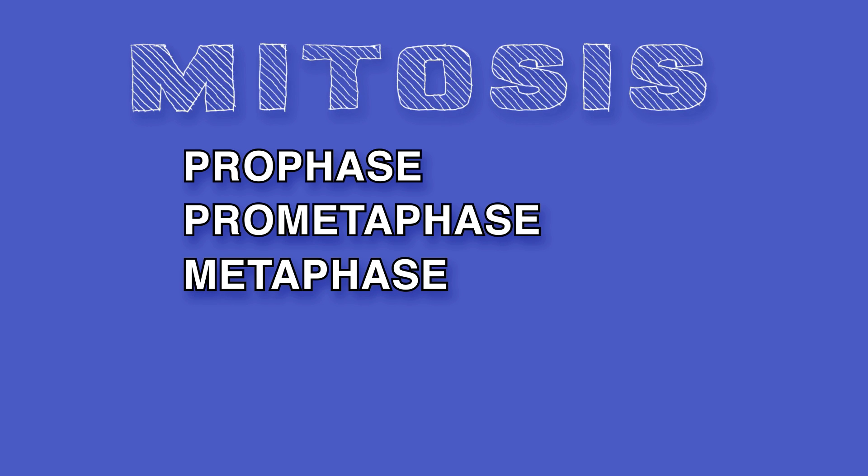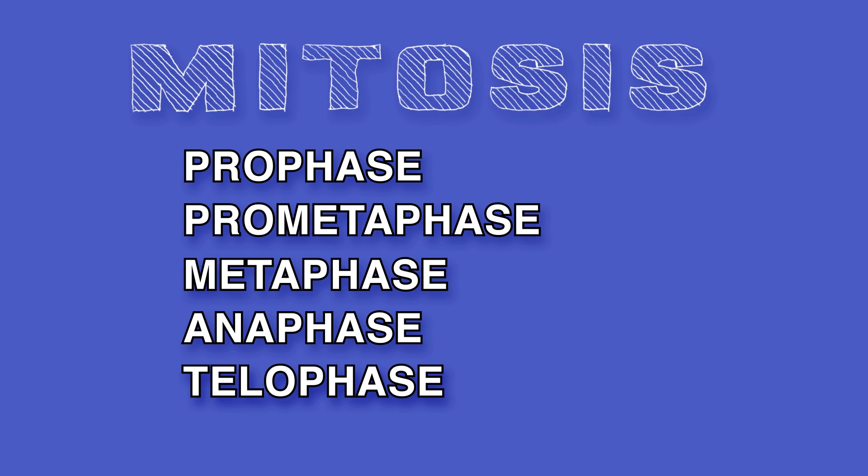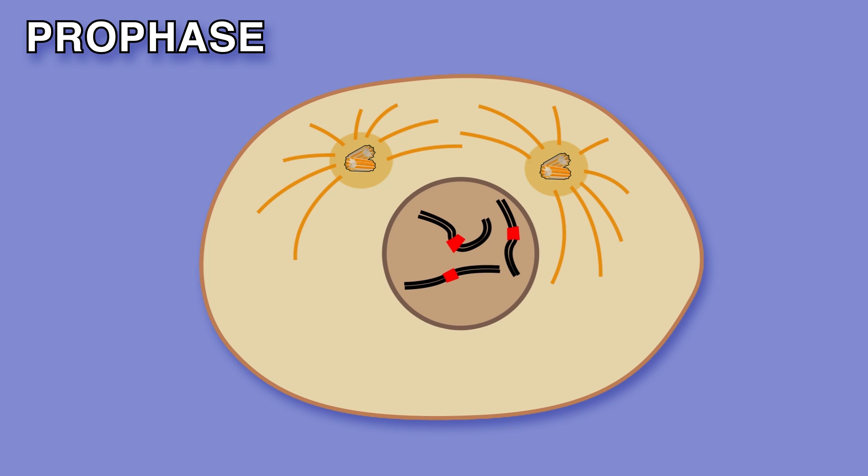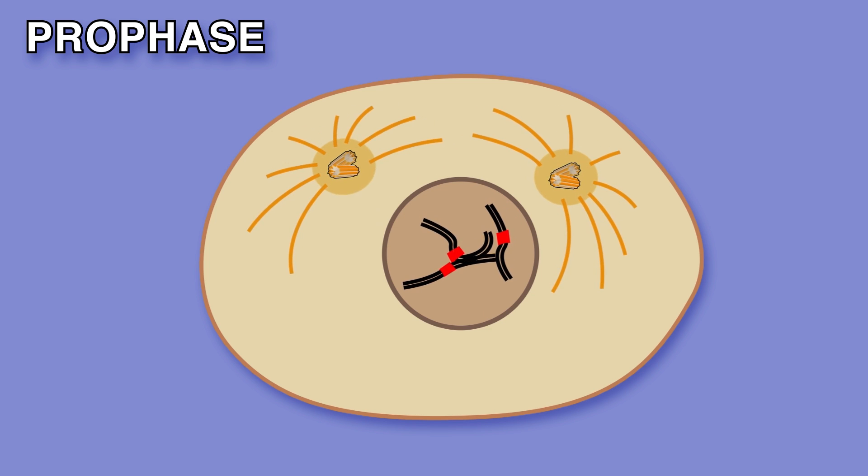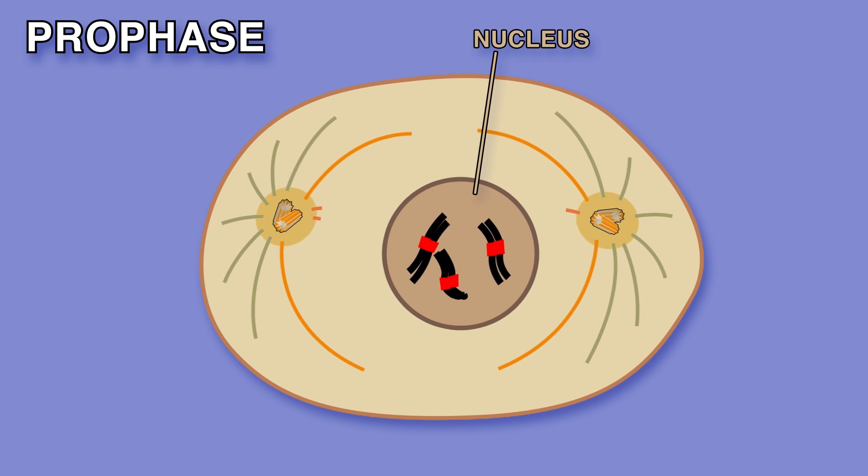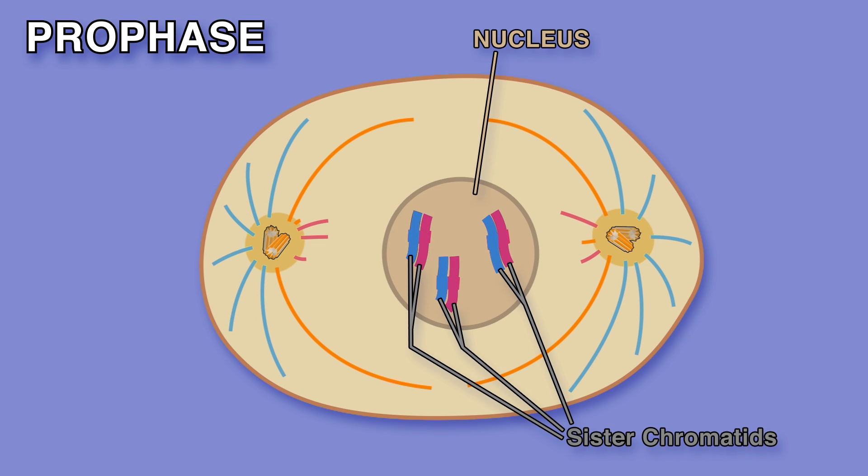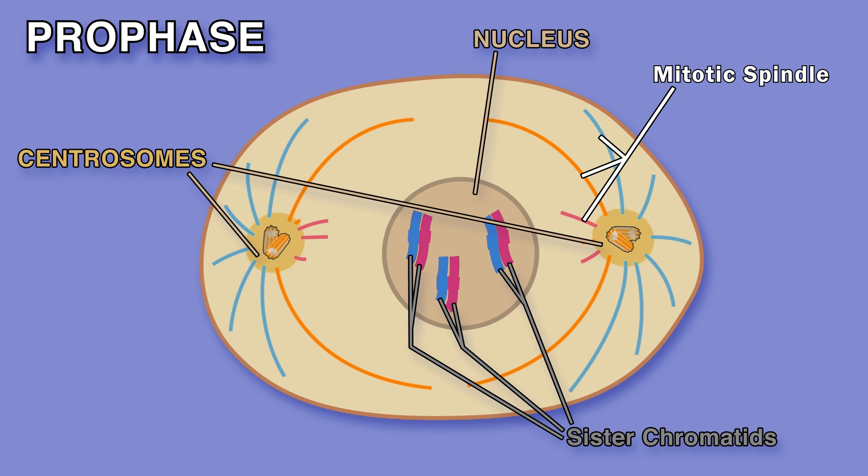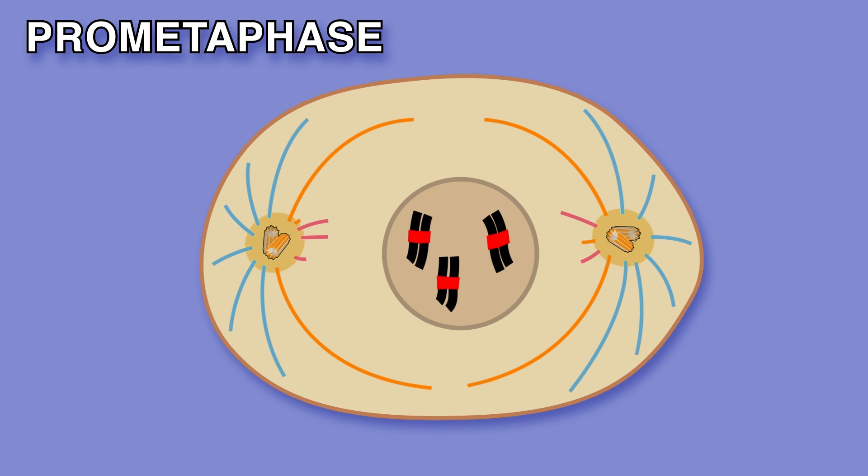During prophase chromosomes condense and become distinct. Each chromosome consists of two sister chromatids linked. Meanwhile outside the nucleus, the mitotic spindle assembles between two centrosomes, the chromosome moving essentials.